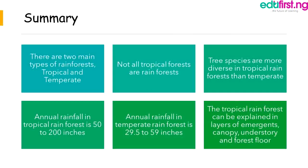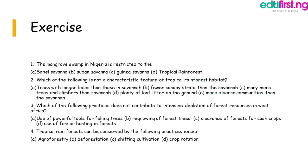Summary: There are two main types of rainforest — tropical and temperate. Not all tropical forests are rainforests. Tree species are more diverse in tropical rainforests than in temperate ones. Annual rainfall in tropical rainforests is 50 to 200 inches; in temperate rainforests it is 29.5 to 59 inches. The tropical rainforest has four layers: emergent, canopy, understory, and forest floor.